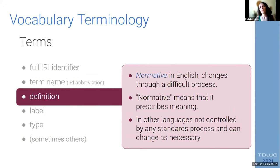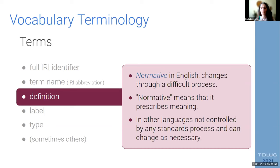Each term has a definition — what does it mean — and this definition is normative in English. Normative means that we're prescribing the meaning of that term. We could change that definition eventually, but it has to go through a complex process. We can have translations of those definitions into other languages, and the translations are non-normative. That means they don't have to follow a standard process to be changed — we can adjust a translation to make it more precise quite easily.